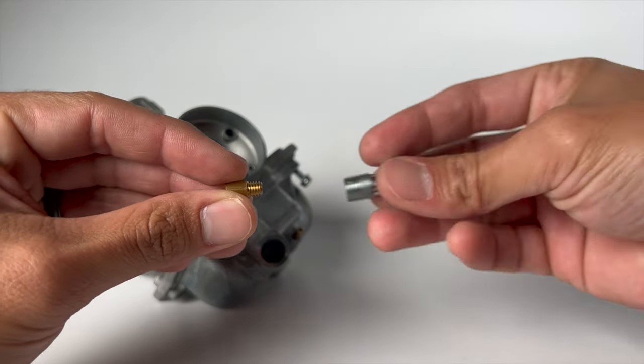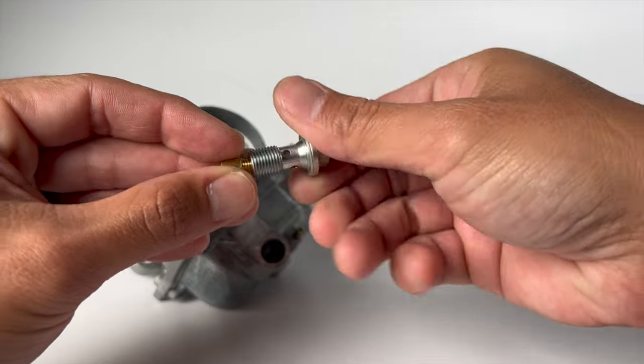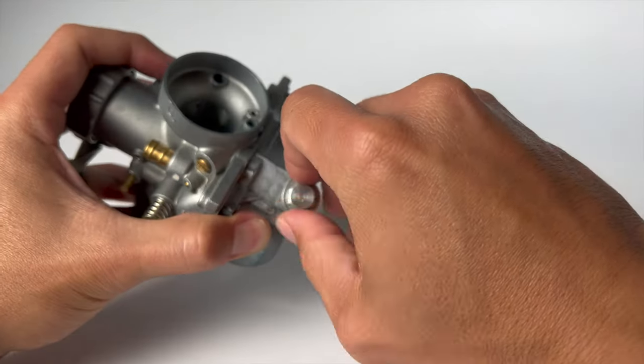Put your new main jet, attach it back to the bolt and back to the bottom of the bolt.